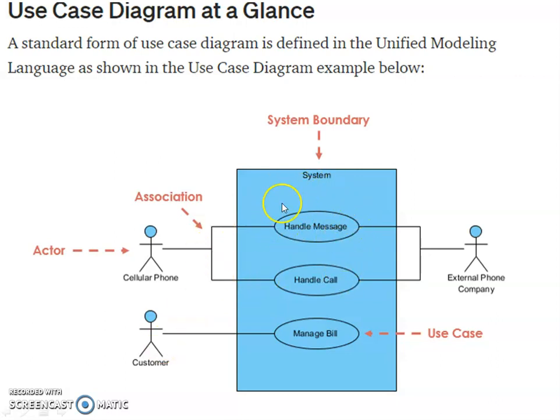Then this is system, and three use cases are here: handle messages, handle call, and manage bill. Then cellular phone, using cellular phone, he can handle messages, send and receive messages, both receive, both messages and call. And it is connected to external phone company. And a customer can manage, he can pay his bill. So these three are use cases.